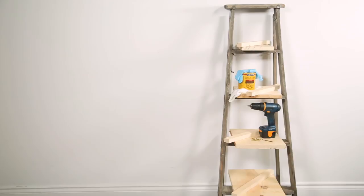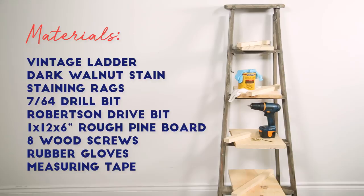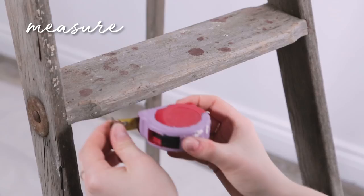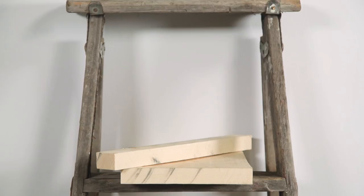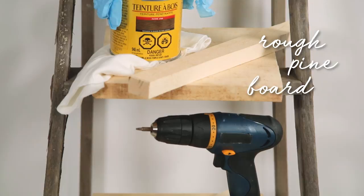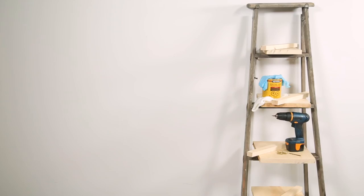To start my project I measured the length of each ladder step to create my measurements for my wood shelving and support arms. I purchased a rough pine board so that the wood will match the aesthetics of my weathered ladder. I cut this board and support arms into the following four sizes.